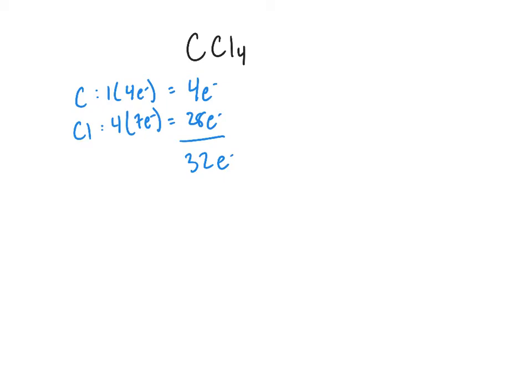We start by putting our central atom first. In many cases this will be obvious, such as in the case of CCl4 — it's pretty clear that carbon is going to be our central atom. If it's not completely clear, one rule of thumb is that the least electronegative atom will be your central atom. Then we're going to connect all other atoms with single bonds. Remember that each bond counts for two electrons, so we've placed 8 out of our 32 electrons.